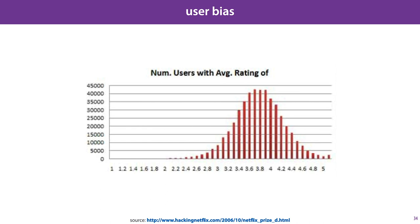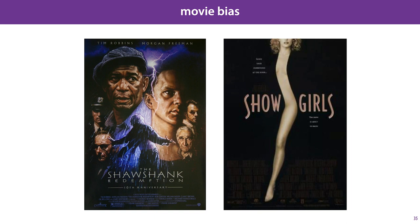We'll start with user bias. The average rating for each user is different. Some users are very positive, giving almost every movie 5 stars, and some are very negative, giving almost every movie less than 3 stars. If we can explicitly model the bias of a user, it takes some of the pressure off the matrix factorization, which then only needs to predict how much a user will deviate from their average rating for a particular movie. The same is true for movies — some movies are universally liked, and some are universally loathed. If we can model the average rating of the movie over all users separately, then it becomes easier to model the rating for a specific user-movie pair.